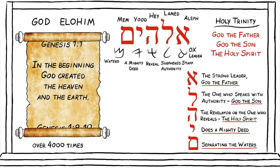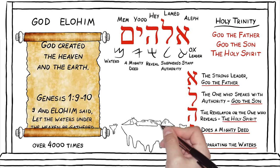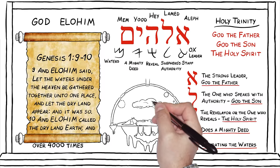Genesis 1:9–10: 'And Elohim said, Let the waters under the heaven be gathered together into one place, and let the dry land appear. And it was so. And Elohim called the dry land earth, and the gathering together of the waters he called the seas, and he saw that it was good.'